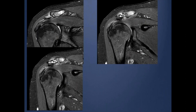Here you can see severe degenerative changes at the acromioclavicular joint with significant edema. If you look carefully, there is thickening of the undersurface of the acromion, which is indenting and deforming the bursal surface of the supraspinatus. This is a little bit away from the joint — this is what we call the subacromial spur.